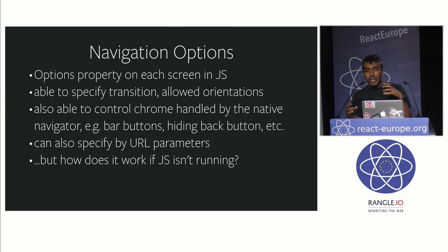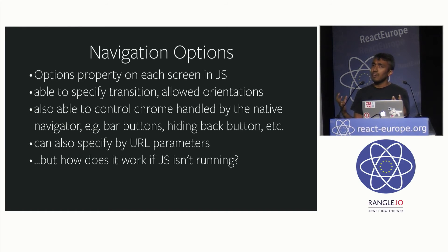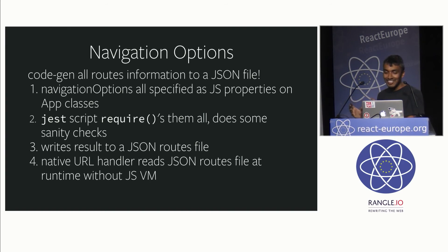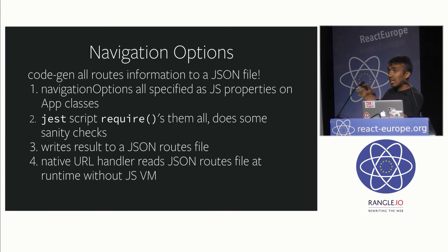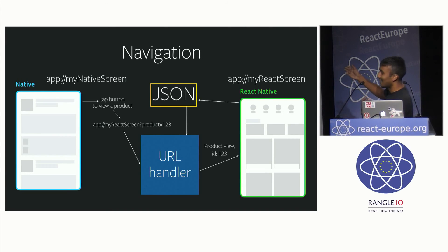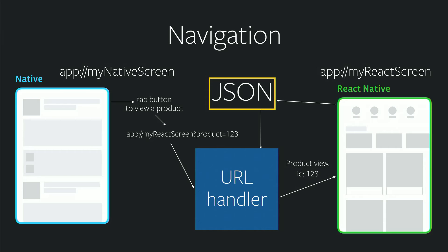This is important because the JS runtime isn't necessarily running when you open a JS screen, so we need a way to get navigation options without JS already running. Our solution is a bit hacky but awesome — we co-gen all our routes into a big JSON file at compile time. We have a JS script that requires all the app classes with navigation options, does sanity checks, and writes everything to a big JSON routes file. At runtime, our native URL handler can read that JSON routes file without needing the JS VM, so it can start up the screen with the right transitions immediately.